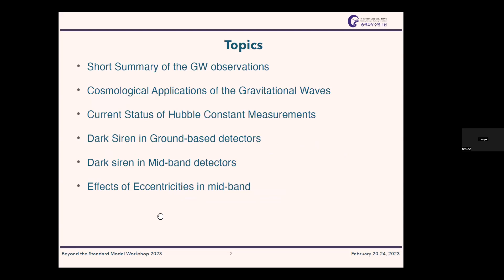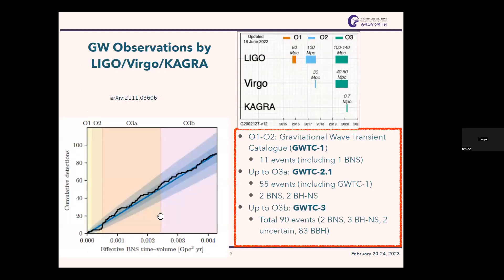I'll start with a short summary of gravitational wave observations so far, then a broad overview of cosmological applications. One important topic is the measurement of the Hubble constant, and I'll present the current status. Then I'll move on to the research topics we are working on: dark sirens in ground-based detectors and dark sirens in mid-band detectors, and also the effects of eccentricities in the mid-band.